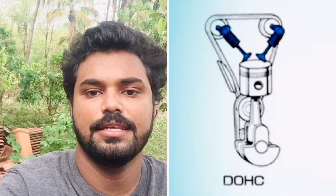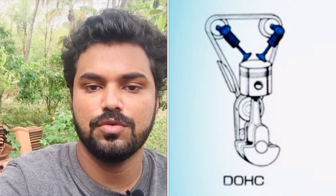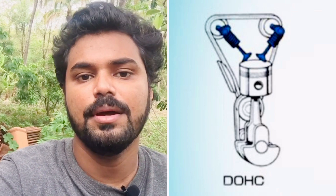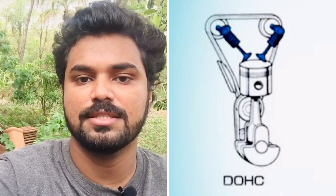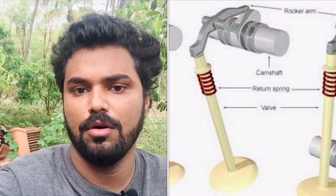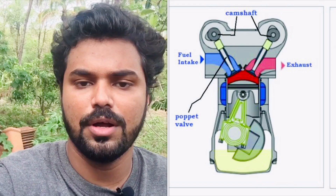DOHC stands for Double Overhead Camshaft. This type of engine has two camshafts. One camshaft operates the intake valves directly, and the other operates the exhaust valves directly — without the use of a rocker arm. SOHC uses a single overhead camshaft, while DOHC uses two separate camshafts.